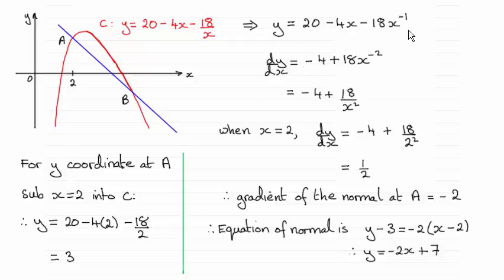So I differentiate this to get the gradient at any point x on the curve for the tangent. Notice how I've changed 18 over x to 18x to the power minus 1. Differentiate in the usual way. Then clean this up again - this negative power, 18x to the minus 2 is 18 over x squared.